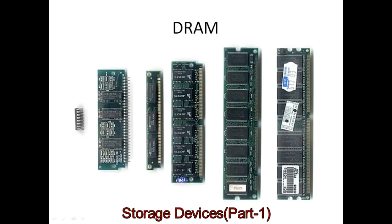Instead, what we find today is DRAM, or dynamic RAM. Here we can see some different DRAM chips and modules from a number of different years and eras. The more recent memory modules on the right contain a number of different DRAM chips on one circuit board, and it just slots into the computer. Modern DRAM modules may contain quite large capacities — up to several gigabytes — whereas earlier chips may have contained only a few kilobytes of RAM.